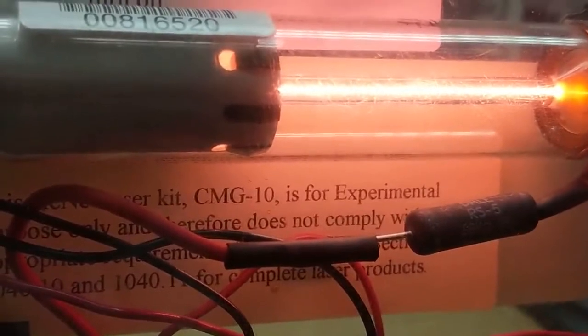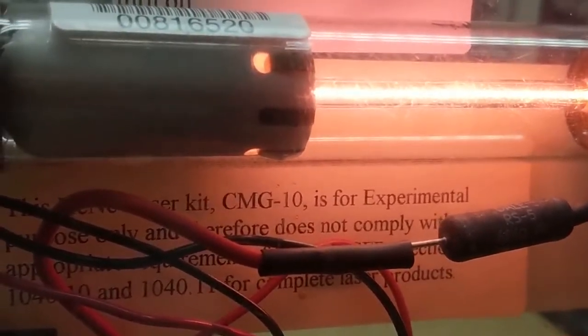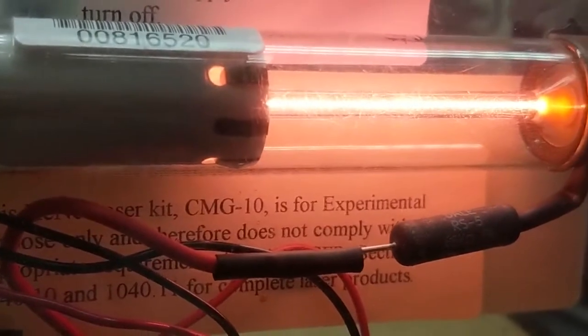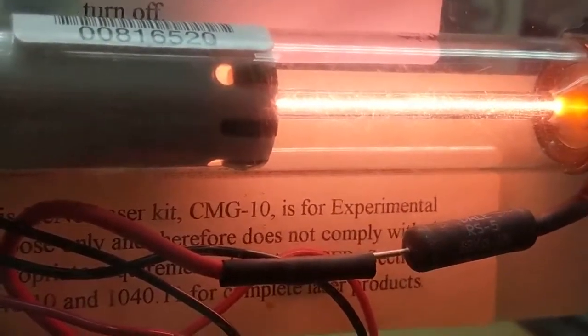That cascade reaction gets quenched if there are too many atoms that are in the way. If you can lower the pressure, it gives you more distance for the electron and the ion to accelerate before they hit something so they can gain more energy and maintain that cascade reaction. So it's low pressure gas inside that tube.